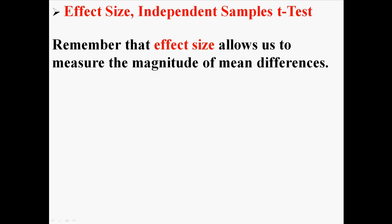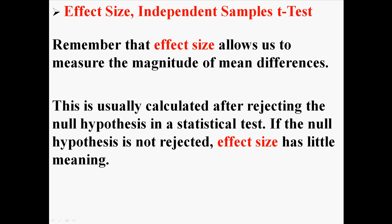For example, if a t-test tells us that two means are different, we can calculate effect size to see if they're just a little bit different or if they're very different. This is usually calculated after rejecting the null hypothesis in a statistical test, meaning the means are different. If the null hypothesis is not rejected, effect size doesn't really have any meaning.